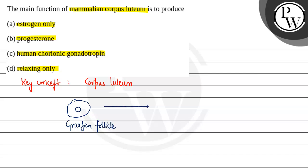Mature Graafian follicle se, jab ovulation hoti hai, yarni 14th day of menstrual cycle pe, jab LH ka peak level hota hai, yarni LH surge hota hai, toh us time pe kya hota hai...